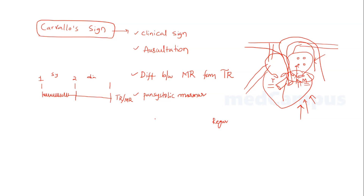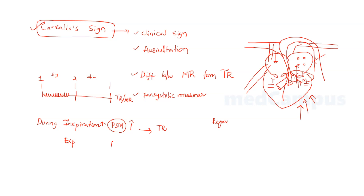To differentiate these two conditions, here comes Carvello's sign. The key point is during inspiration — during the inspiration phase of the respiratory cycle — blood flow increases to the right side of the heart. Therefore, during inspiration the pan-systolic murmur increases in intensity in case of tricuspid regurgitation, and during expiration the pan-systolic murmur decreases in intensity in case of tricuspid regurgitation.